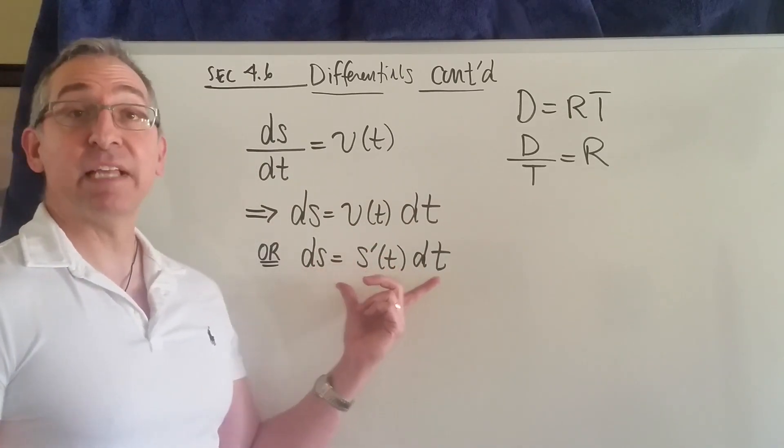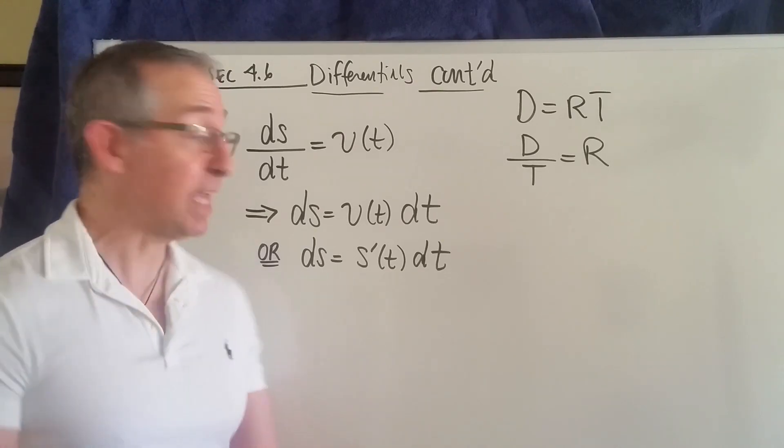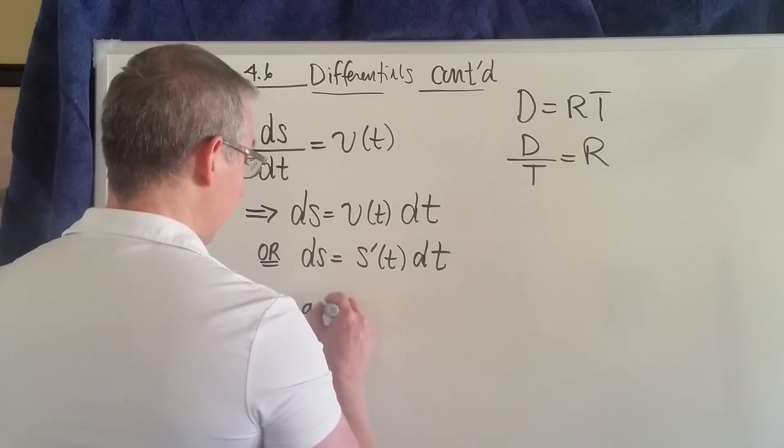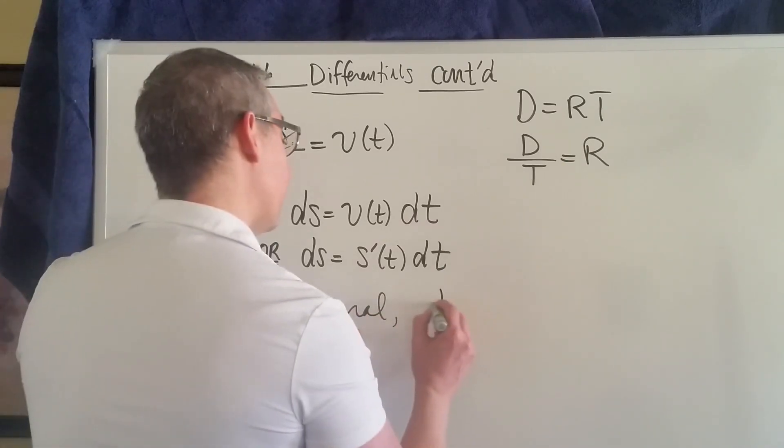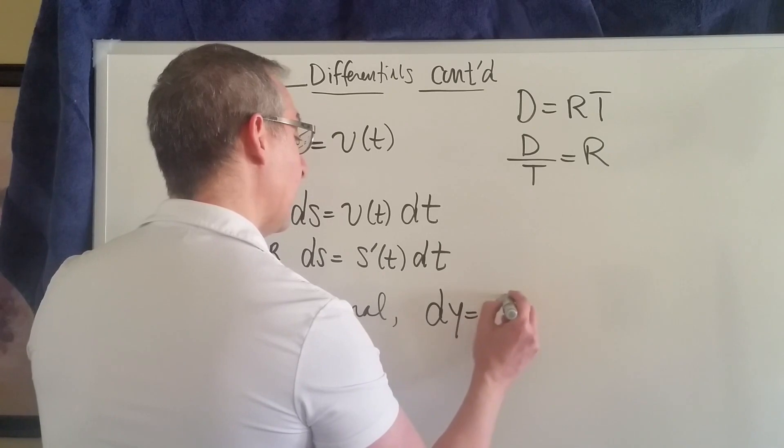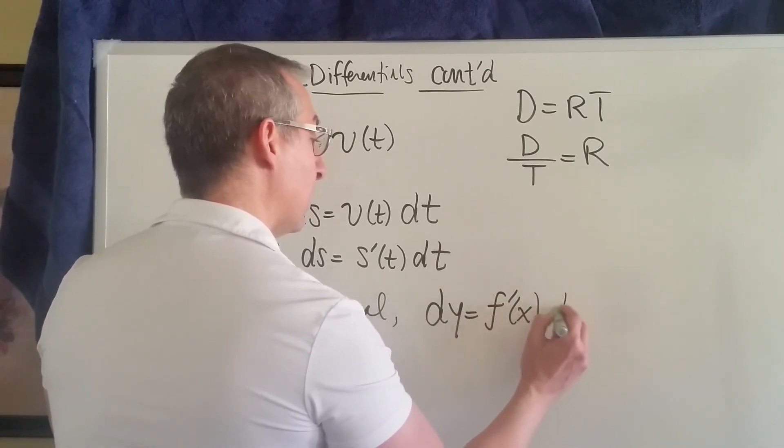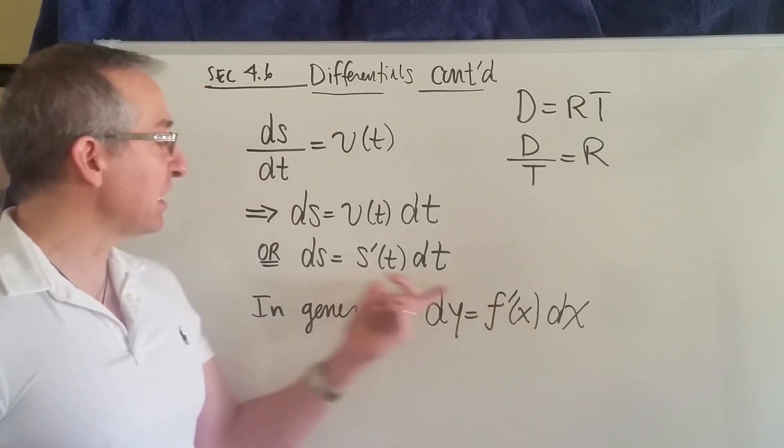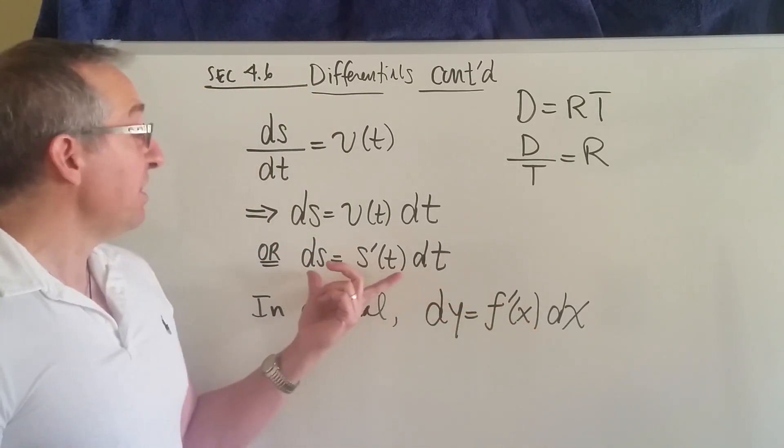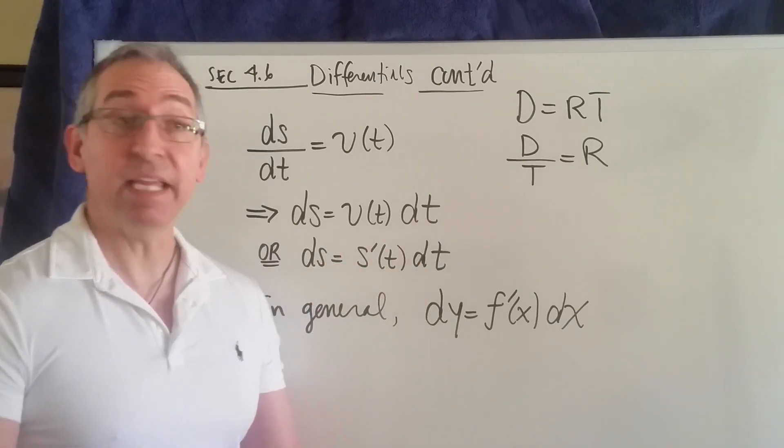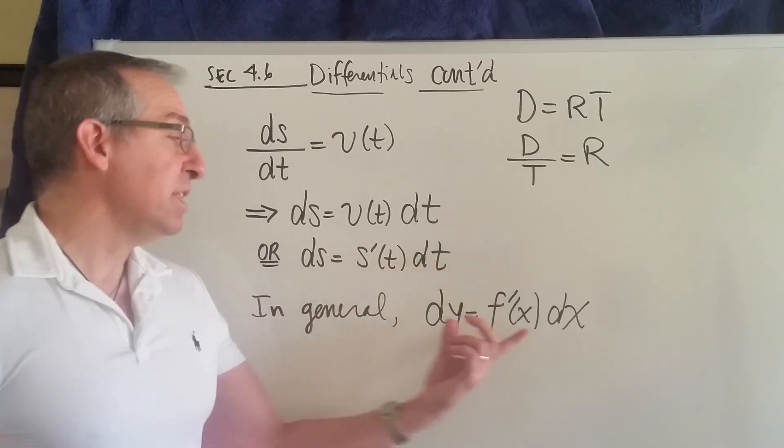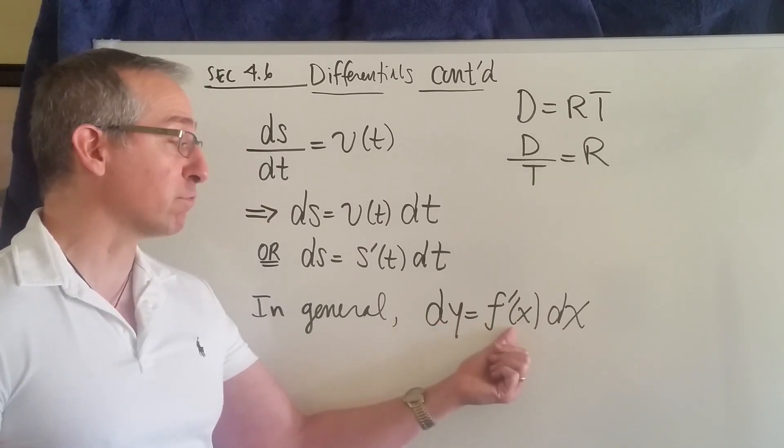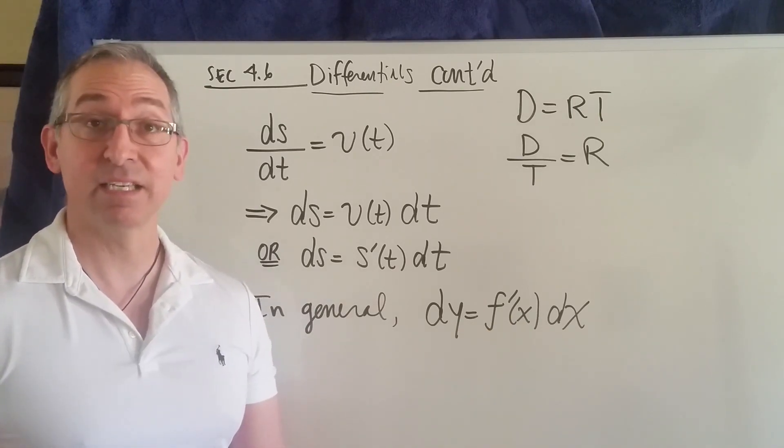This one right here, I'm going to generalize this for all functions. So this is just a generalization of this statement right here. This is our physics problem: position, velocity, change in time. This is just any generic function. So this says the differential of a function is equal to its derivative times the differential dx.